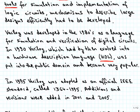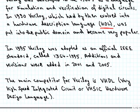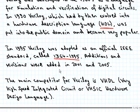In 1995 Verilog was adopted as an official IEEE standard called the 1364-1995 standard. There were additions and revisions made to this standard, still 1364, but there is a 2001 and a 2005 version.